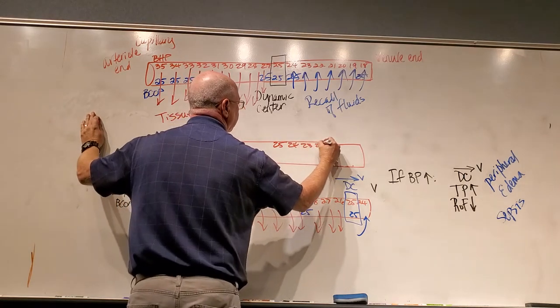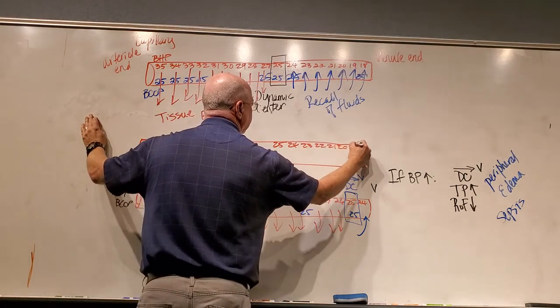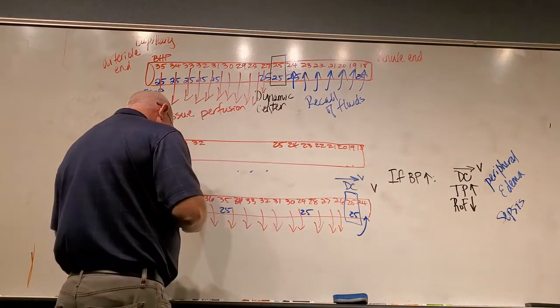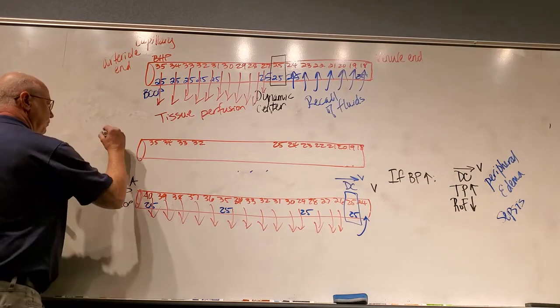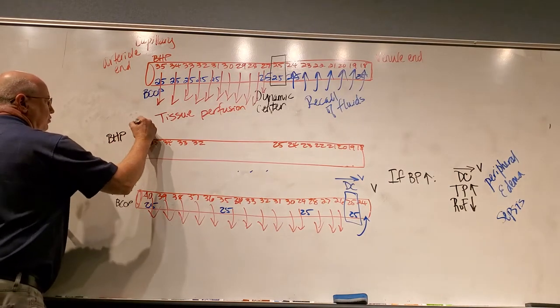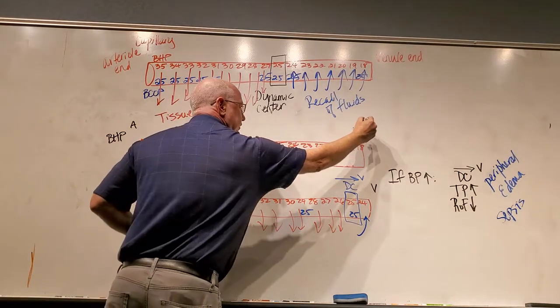24, 23, 22, 21, 20, 19, and 18. Now, that's my blood hydrostatic pressure, right? This is my arterial end. This is my venial end.